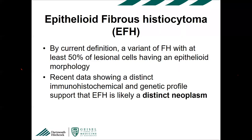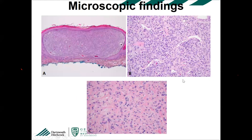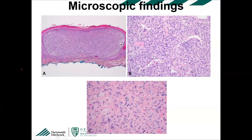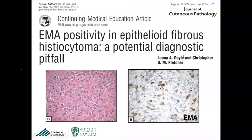Epithelioid fibrous histiocytoma: historically defined as a fibrous histiocytoma with at least 50% of cells having epithelial morphology, but that definition is outdated. Recent data showing a distinct immunohistochemical and genetic profile support this as a distinct neoplasm. It doesn't look like a typical dermatofibroma — it is well circumscribed, has an epidermal collarette, does not entrap collagen bundles at the periphery, and the cells look epithelioid with perivascular accentuation and binucleated forms.